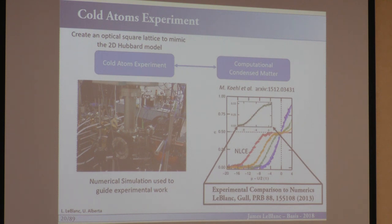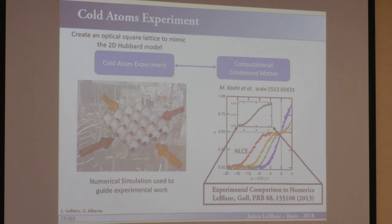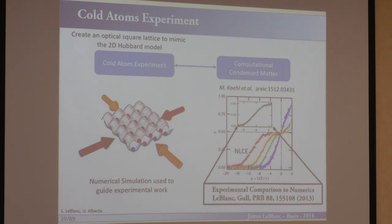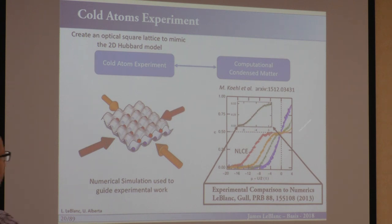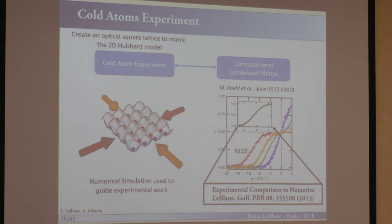The Hubbard model has also drawn attention from cold atom experiments. One of the ways to solve a problem is to generate a machine that exactly mimics the problem you're trying to solve. So one way to do that is to generate in a lab — this is a picture of a lab from the University of Alberta — a lattice with cold atoms, where you can tune the interactions between those atoms to mimic a model Hamiltonian. When they do that, they can look at something like the density as a function of chemical potential and compare results to different numerical techniques like NLCE or some of our earlier work.